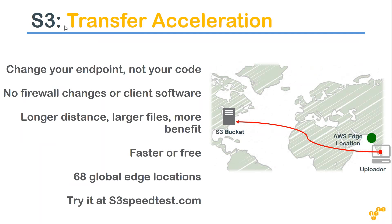One of the most common techniques is transfer acceleration. Enable it whenever you need it, because it moves your data between Amazon edge locations using Amazon's own internal networking. It is the best option for longer distances and larger files, giving you the least amount of upload time. A URL is provided to test the speed, and it will upload certain files and give you a speed result showing the transfer acceleration you can achieve.